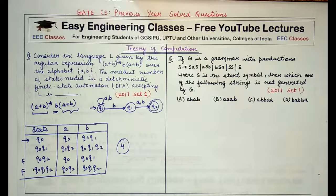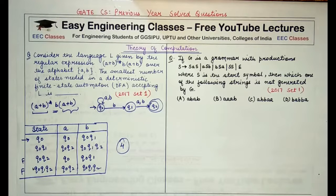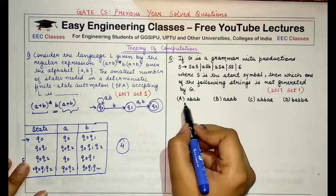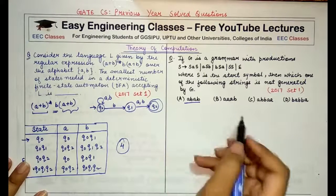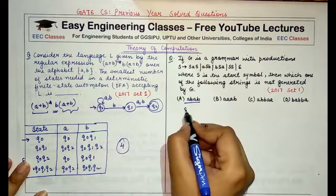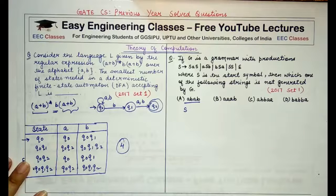Now coming to the second question, we are given a grammar with the productions where S is the start symbol. Then we have to find out which of the following strings is not generated by G. If we start with this string abab and I start drawing its tree, syntax tree or a normal tree for generating this string.